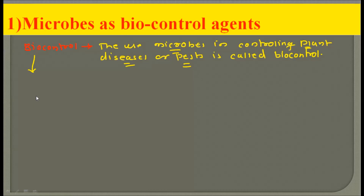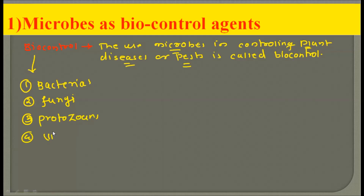Biocontrol can be done using four different types of organisms: first, bacteria; second, fungi; third, protozoa; and fourth, viruses. Each of these has a specific host range and they avoid the development of those hosts in the agricultural field, thereby avoiding disease-causing agents. That is why they are said to be biocontrol agents.